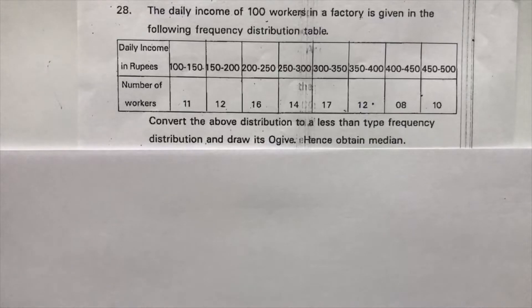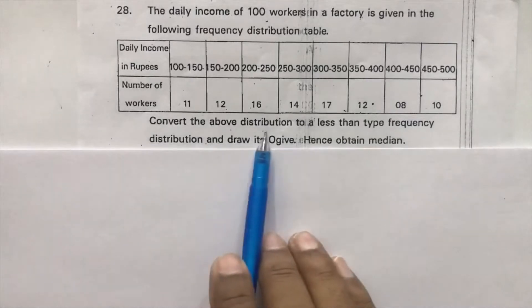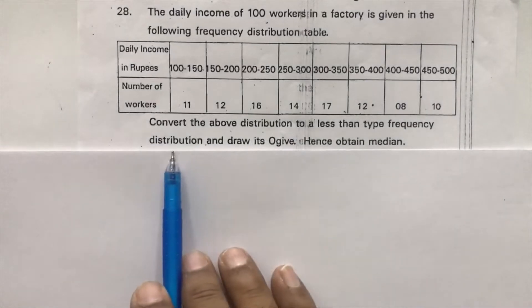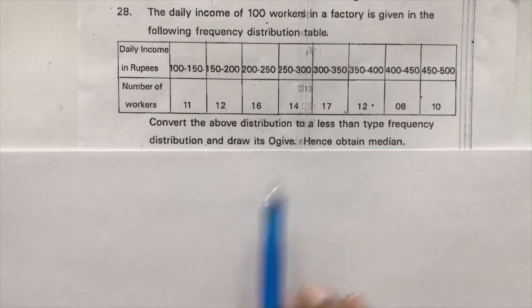The daily income of 100 workers in a factory is given in the following frequency distribution table. So convert the above distribution to a less than type frequency distribution and draw its ogive. Hence obtain the median.